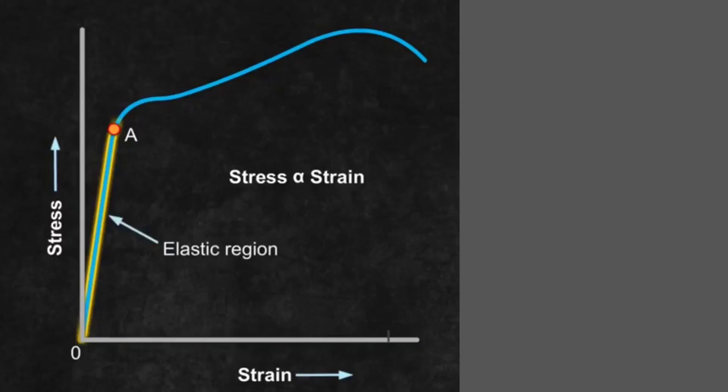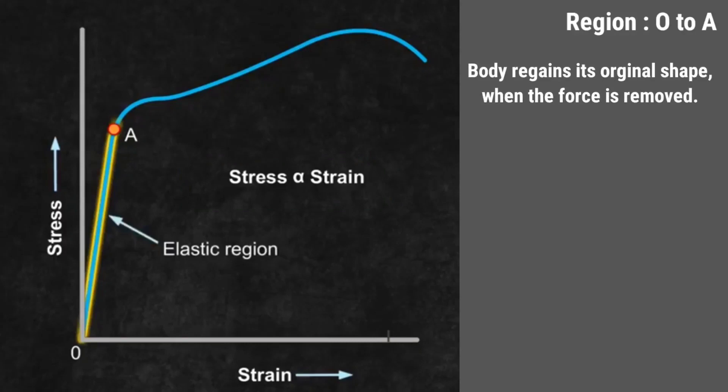From this graph, the region up to A, the curve is linear. In this region, Hooke's law is valid - stress is directly proportional to strain. If you increase the applied force or stress, the strain also increases. An important point is that the body regains its original dimensions or shape when the applied force is removed. This region is known as the elastic region.